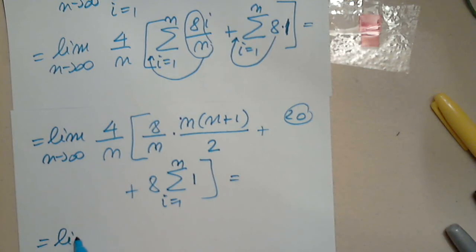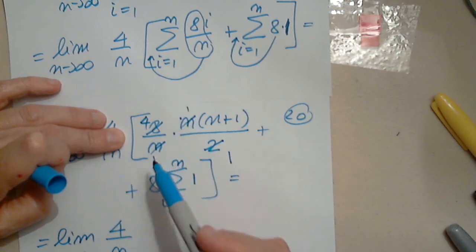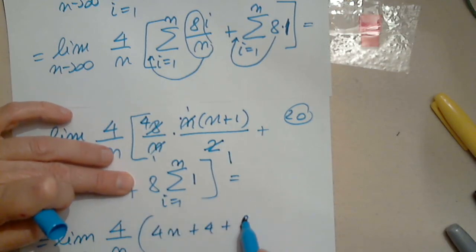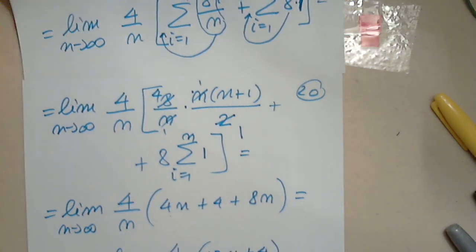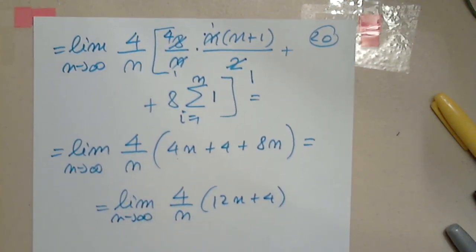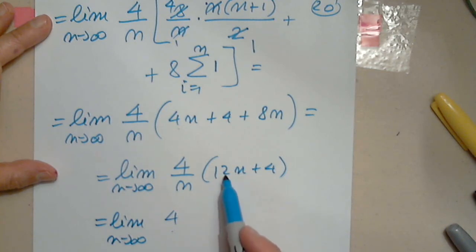Therefore I have limit n approaches infinity from 4 over n. I will simplify: 4n plus 4 plus 8n. Limit n approaches infinity, 4 over n. And this is 12n plus 4. So I have 4 times 12, 48n plus 16 divided by n.